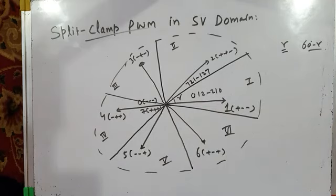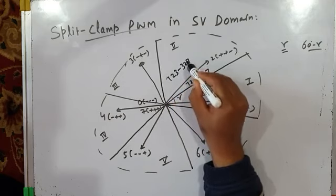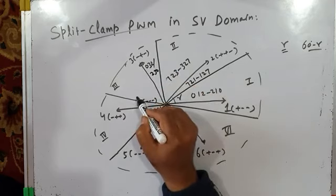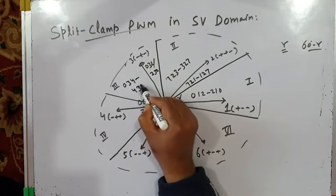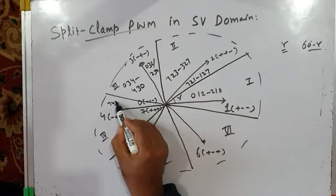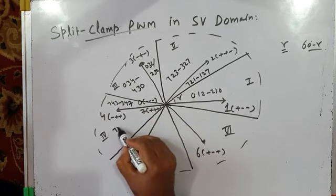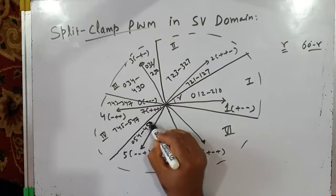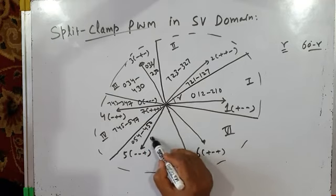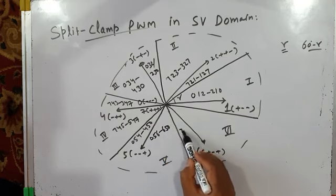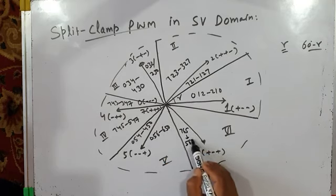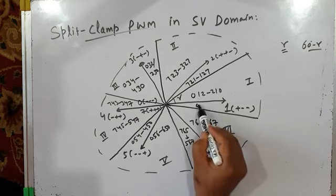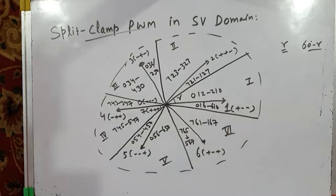Examining the sequence 7-6-1-1-6-7 (gamma interval): V7 is plus plus plus, V6 is plus minus plus, V1 is plus minus minus — R phase is clamped to positive DC bus. For the 60 minus gamma interval with sequence 0-1-6-6-1-0 in the adjacent sub-sector, R phase is again clamped. So R phase total clamping to positive DC bus is gamma plus (60 minus gamma) = 60 degrees, and by half-wave symmetry, it will be clamped to negative DC bus for another 60 degrees. Average error pole voltage is zero during all clamping intervals, and nonzero elsewhere. This applies similarly to phases Y and B.